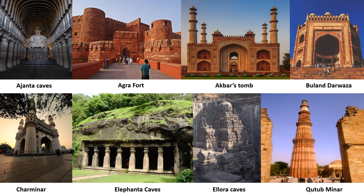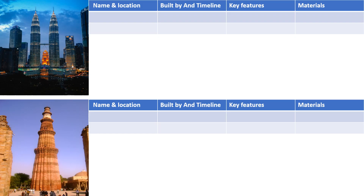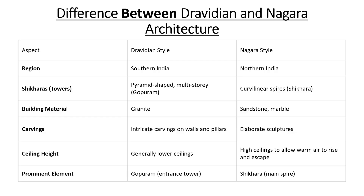One option you can do is just write the name and location, built by whom, and the timeline of the particular monument or famous building, then the key feature of that building and the materials used. You can prepare a chart for this likewise. So many of you also requested me to make a comparison between Dravidian and Nagara architecture.